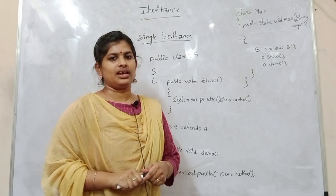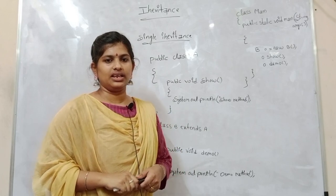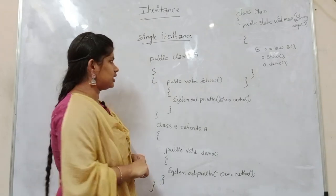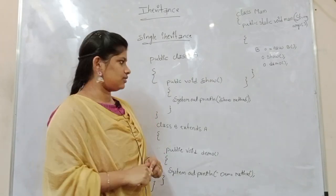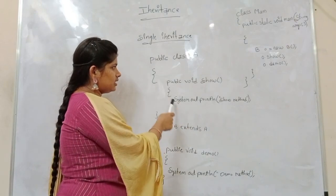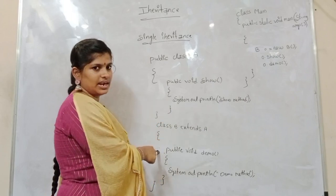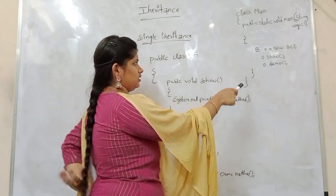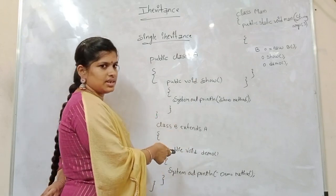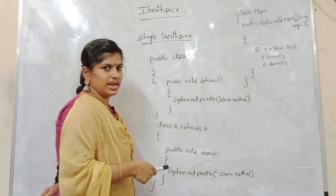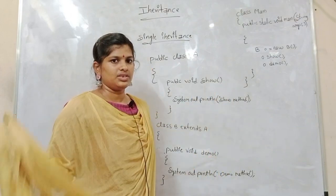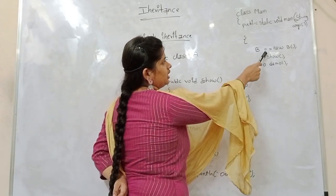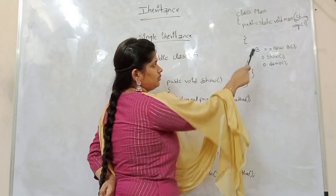Inheritance means one class acquires the properties of another class. There are five types of inheritance: single inheritance, multi-level inheritance, multiple inheritance, hierarchical inheritance and hybrid inheritance. In single inheritance, there is only one parent class and one child class. If we extend the parent class, the show method will be extended to the child class. This is the main class. To execute these methods, we create an object for class B, because class A's method is also present in class B. With the child class object reference, we can call both the parent class and child class methods. That's all about single inheritance.